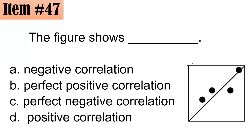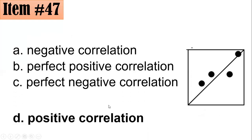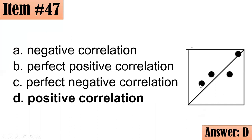Item 47: The figure below shows negative, perfect, positive, perfect, negative, or positive correlation. The trend line rises from left to right, so it should be positive. However, not all points lie on the line. Hence, this is a positive correlation, letter D. If it were perfect positive, all points would lie exactly on the line; since some do not, it is positive but not perfect.